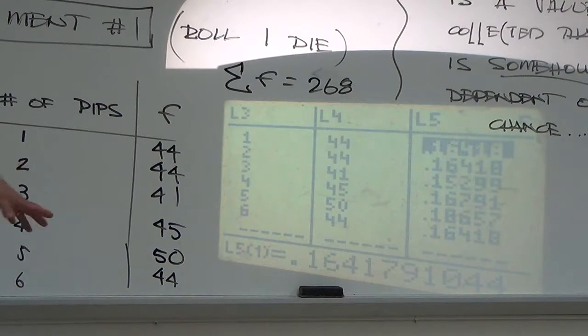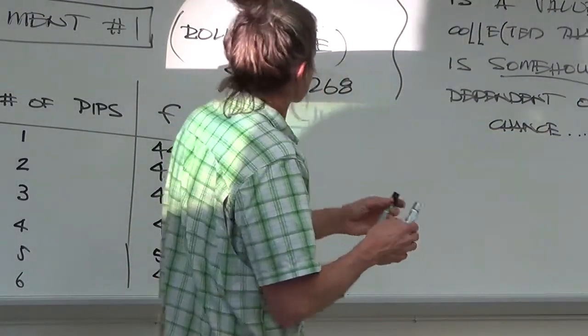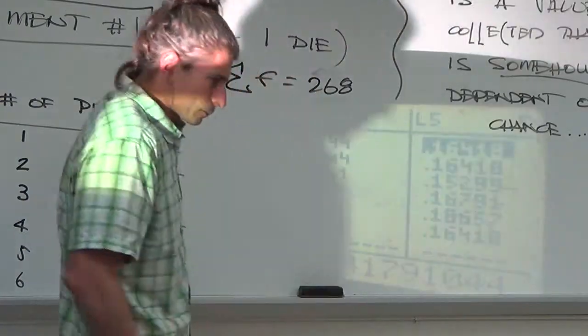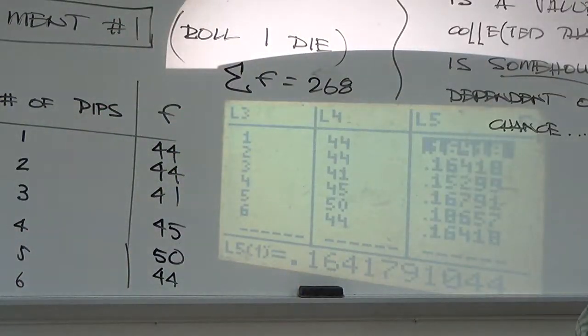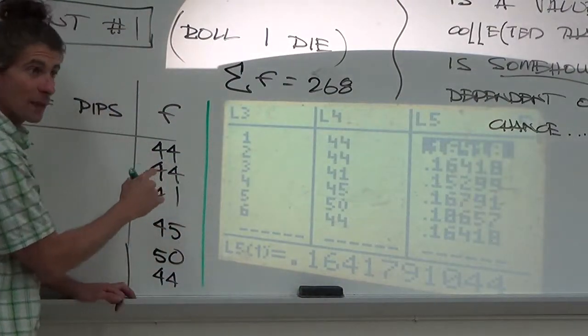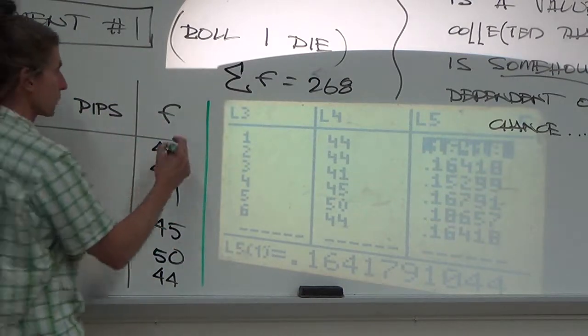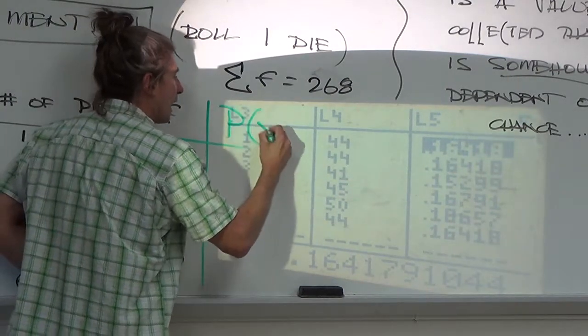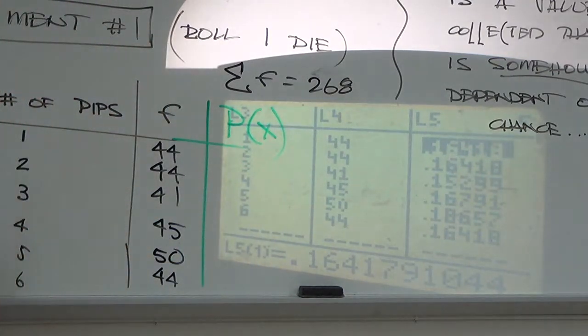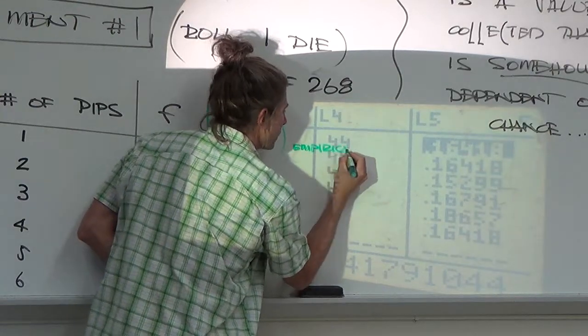I call these the empirical probabilities. Now, I call them empirical. I'm going to break this down for you here. 268 because that's how many rolls we have all together, right? So, friends, I'm going to add a column right here on this distribution that you guys just made. I'm basically going to make the column that we have in the TI. I'm going to put P of X, but I'm going to subscript that one empirical.